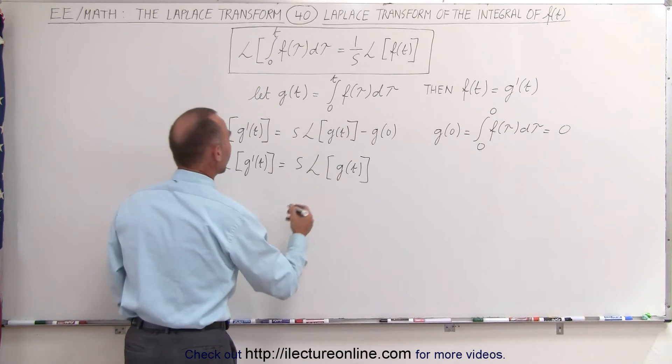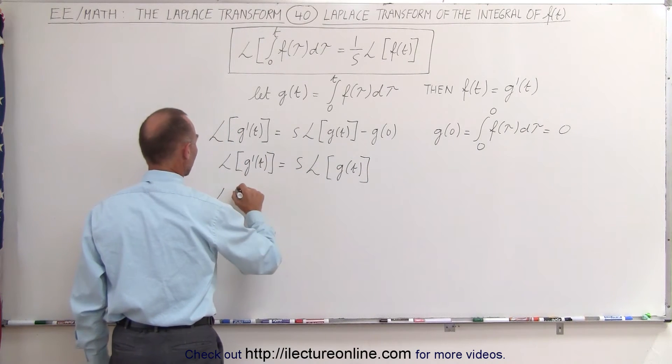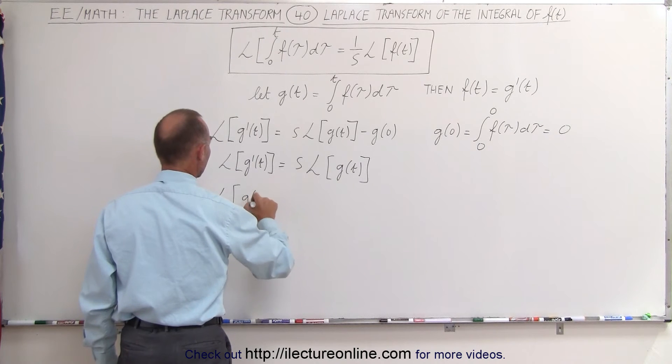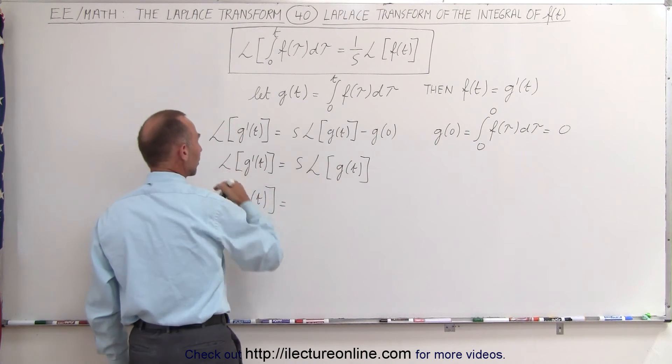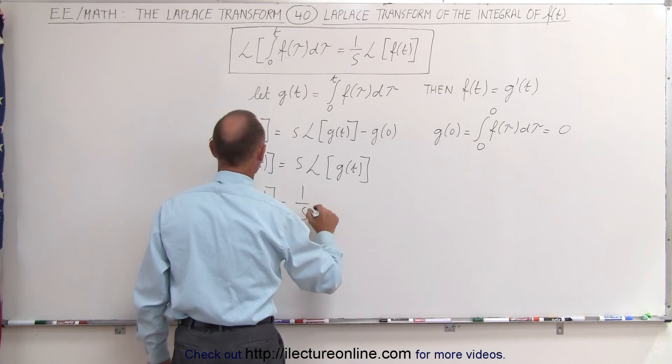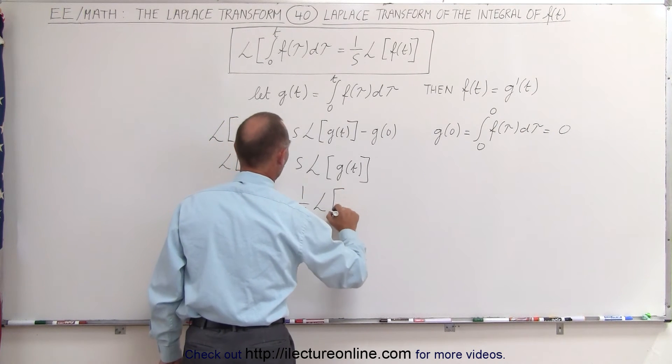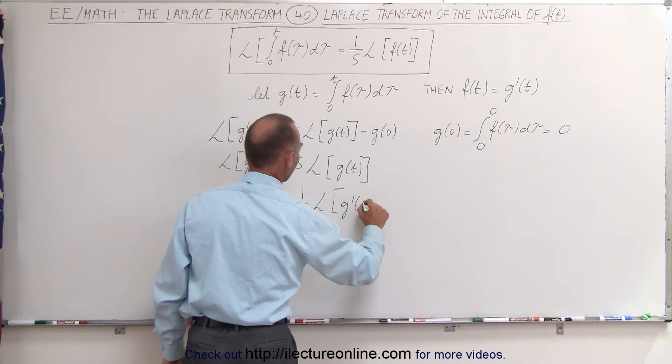In other words, if we rewrite this equation, the Laplace transform of g(t) equals, when we bring s to the other side, 1 over s times the Laplace transform of g'(t).